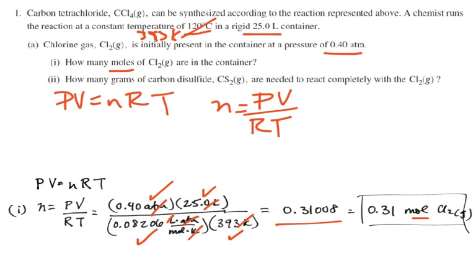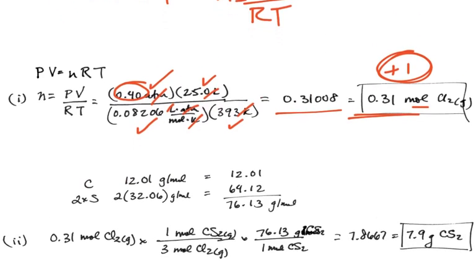With my calculator, I get 0.31008, which I round off to 0.31 because that number is a two-significant-figure number. So here's my first answer, part A: 0.31 moles, and that is worth one point on this question out of ten.